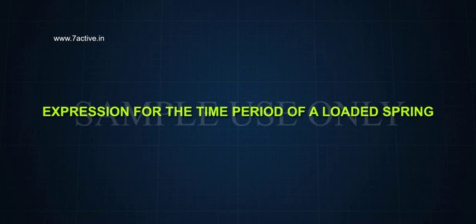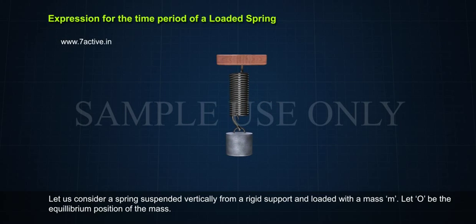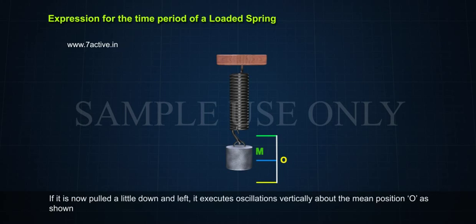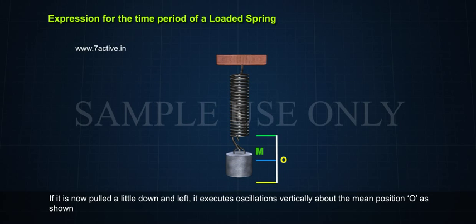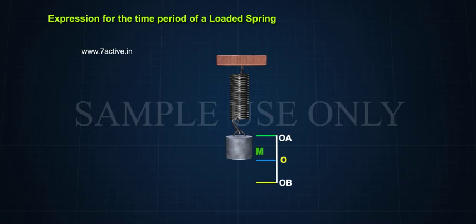Expression for the Time Period of a Loaded Spring. Let us consider a spring suspended vertically from a rigid support and loaded with a mass M. Let O be the equilibrium position of the mass. If it is now pulled a little down and left, it executes oscillations vertically about the mean position O as shown in the figure. Let OA or OB be the amplitude of oscillations.